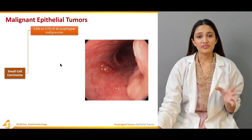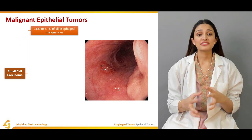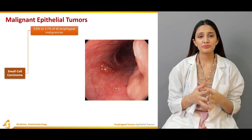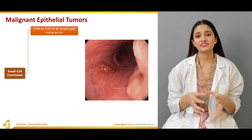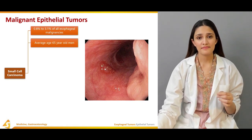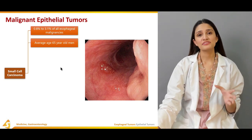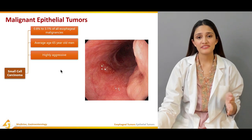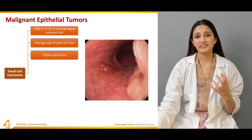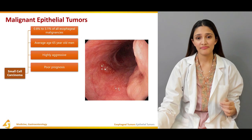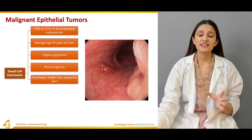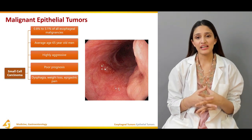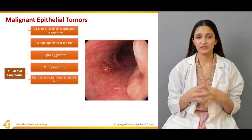The next type of malignant epithelial tumor is small cell carcinoma, which accounts for around 0.8 to 3.1% of all esophageal malignancies. The average age of presentation is around 65 years old, with a prominent male predominance. It is a highly aggressive tumor with a very poor prognosis. The patient usually presents with dysphagia, weight loss, and epigastric pain or chest discomfort.